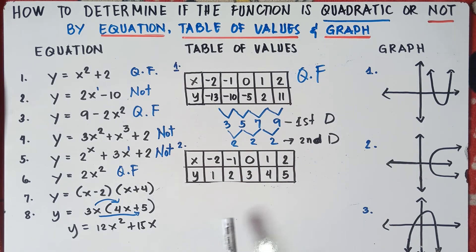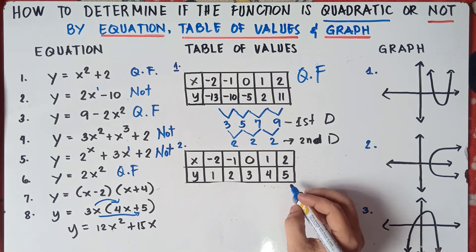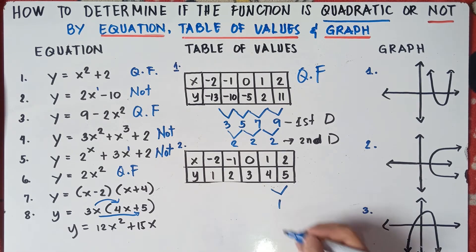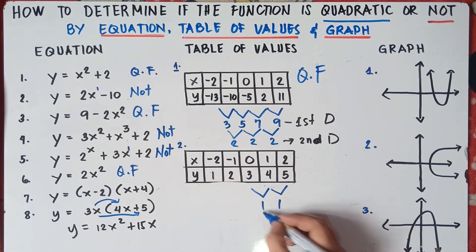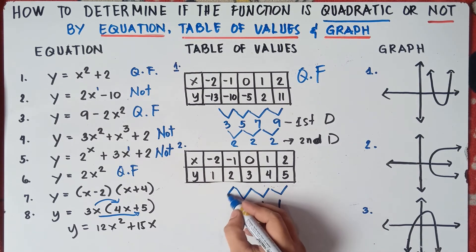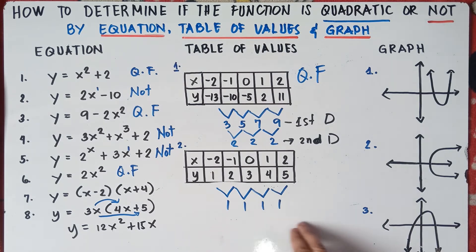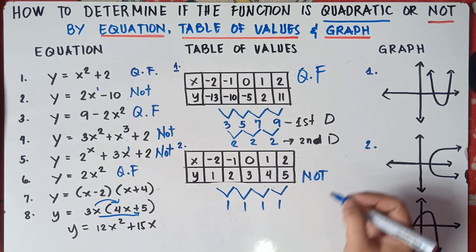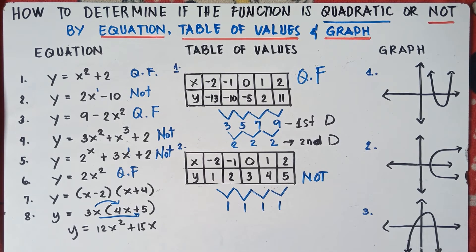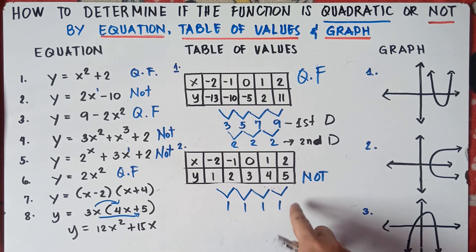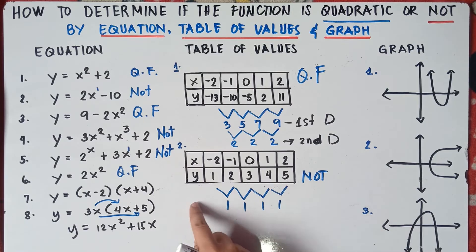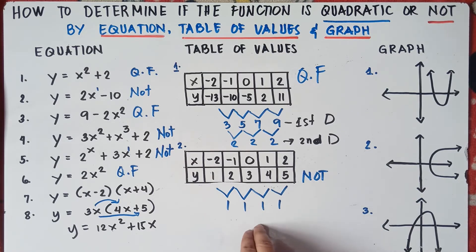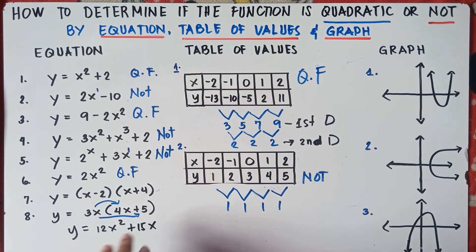Let's try number 2. Subtract the y values: 5 − 4 = 1, 4 − 3 = 1, 3 − 2 = 1, 2 − 1 = 1. When the first differences are all the same, therefore this function is not a quadratic function — it is a linear function. Always remember: for quadratic, it should be the second difference that is equal.